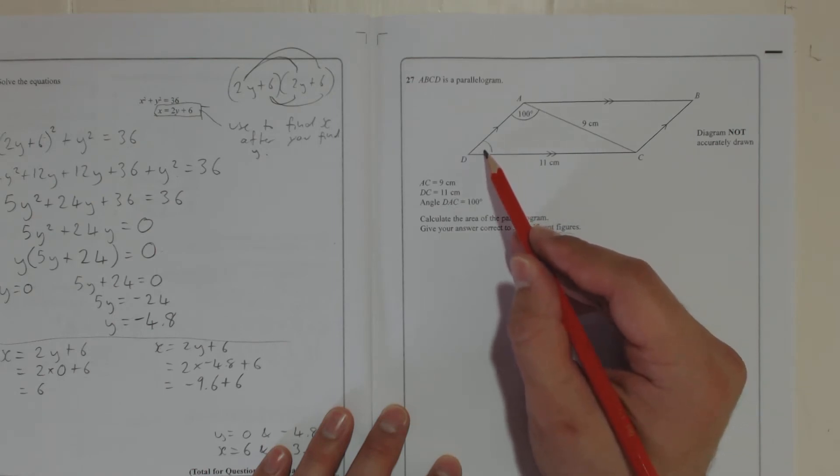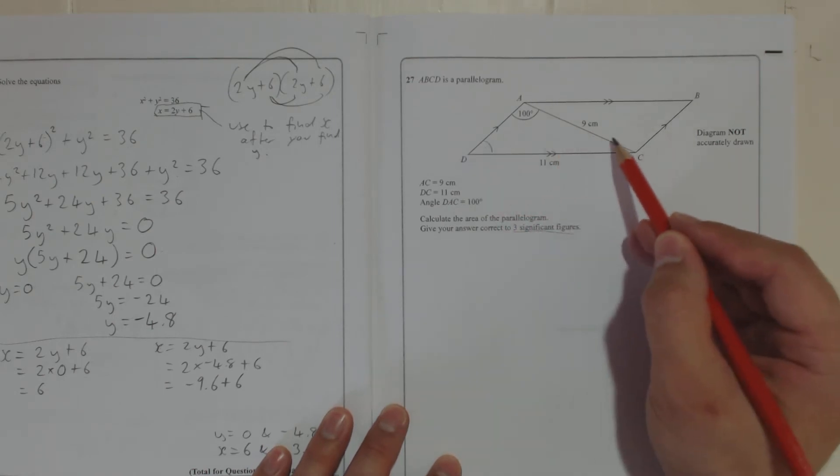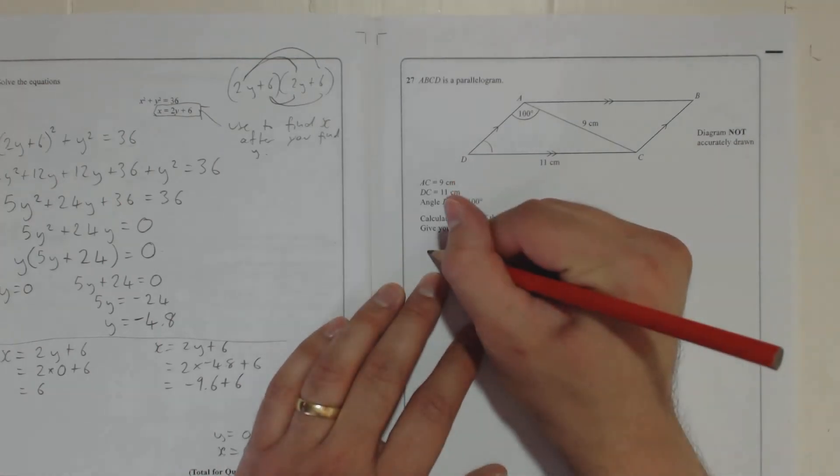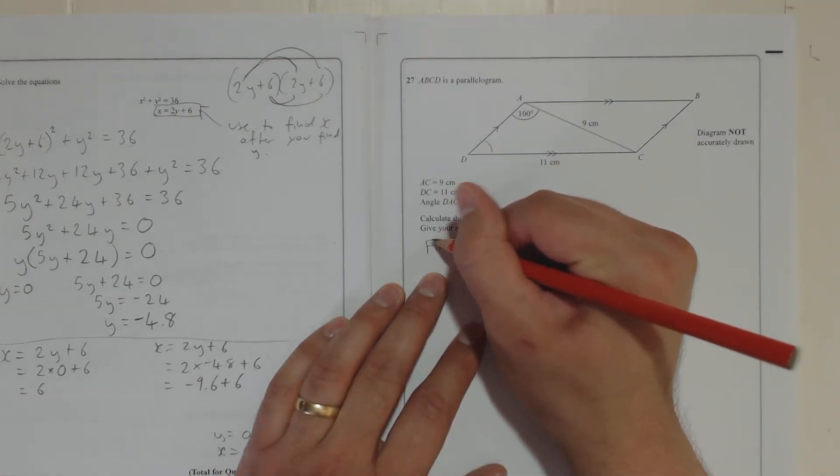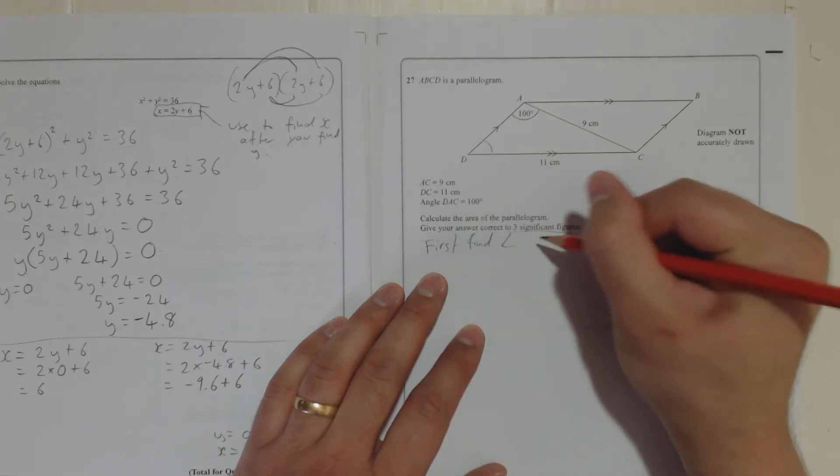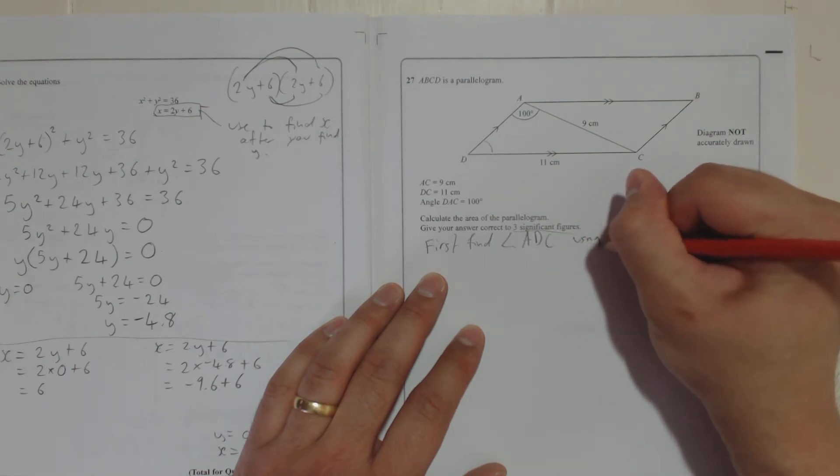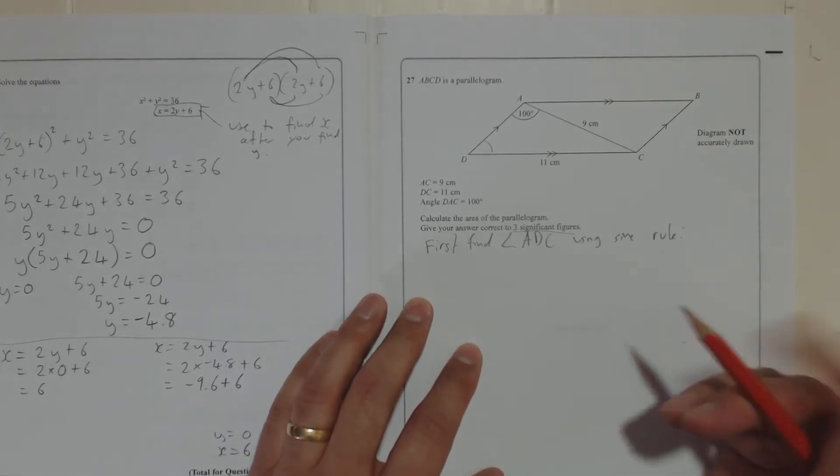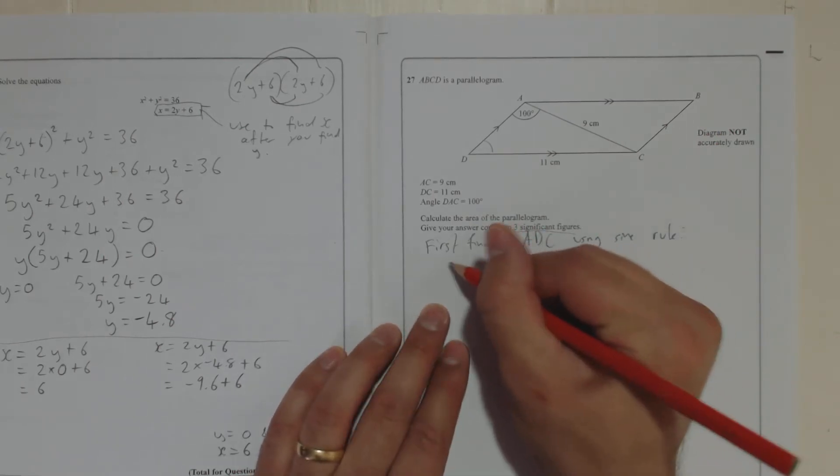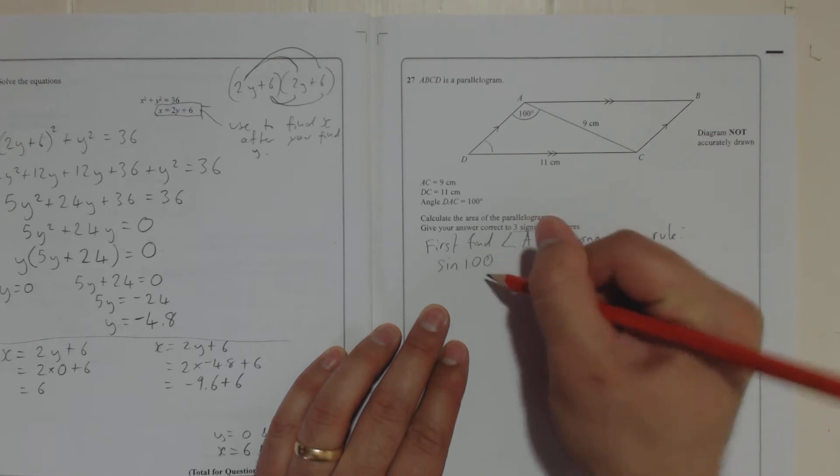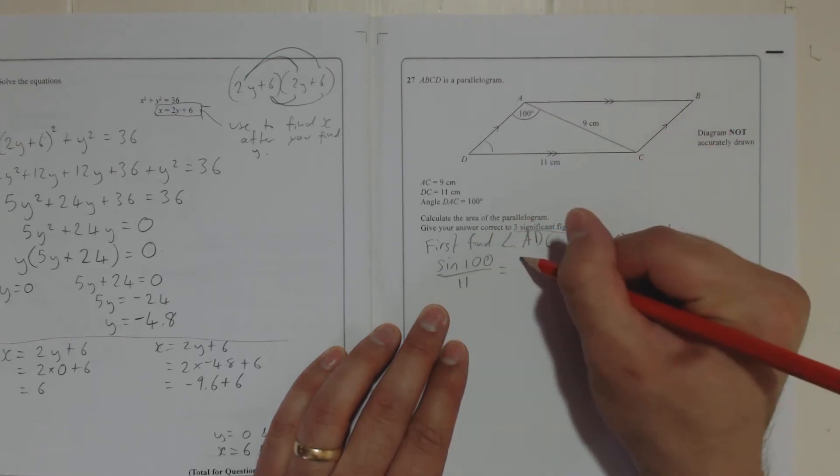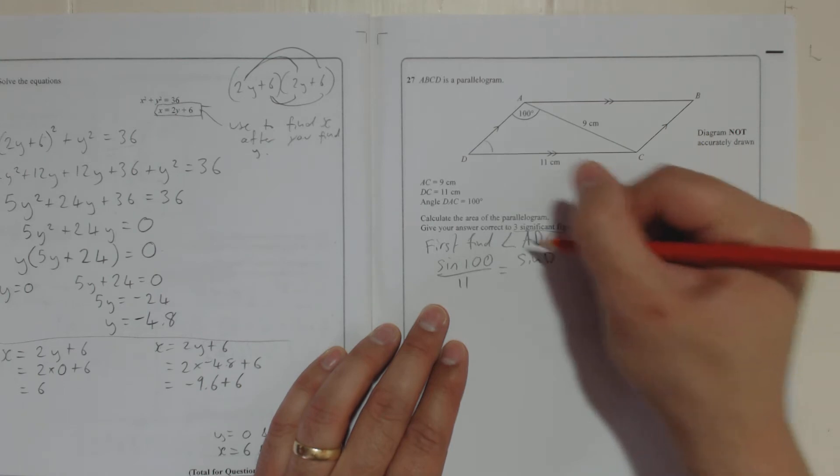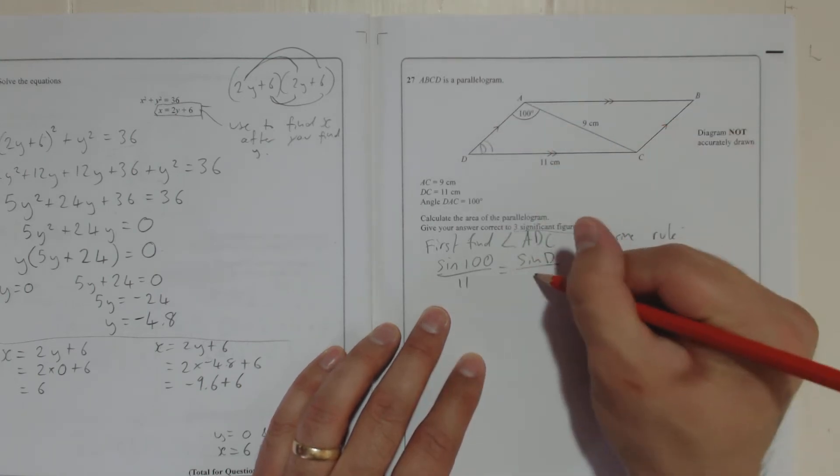Remember the sine rule at the front? It says here, the sine rule, A over sine A. So side A divided by the sine of the angle opposite gives you the same answer as another side divided by the sine of the angle opposite that, B over sine B. Or this side divided by the sine of the angle opposite that. It also works the other way around. So sine of that angle divided by this side would be equal to the sine of this angle divided by that side or the sine of this angle divided by that side. So that's what we're going to do. We're going to use that rule. So we're going to find this angle here and then when we find this angle here, we can find this angle here because we know that these add up to 180 degrees. So I'm going to say, first, find angle ADC using sine rule.